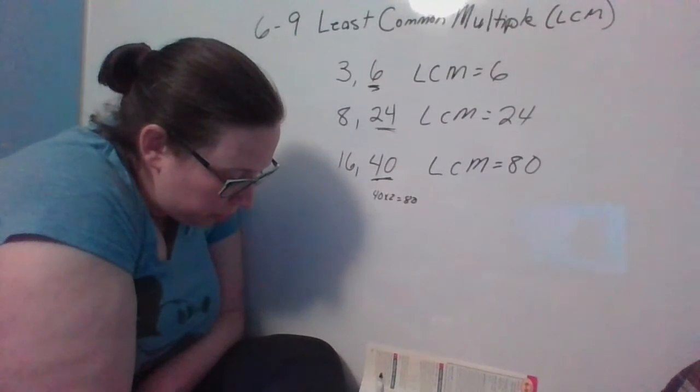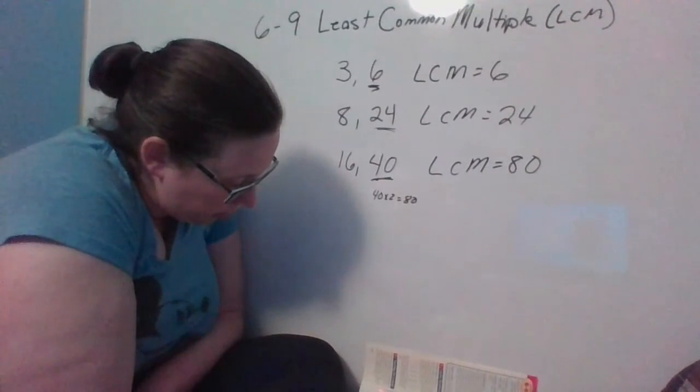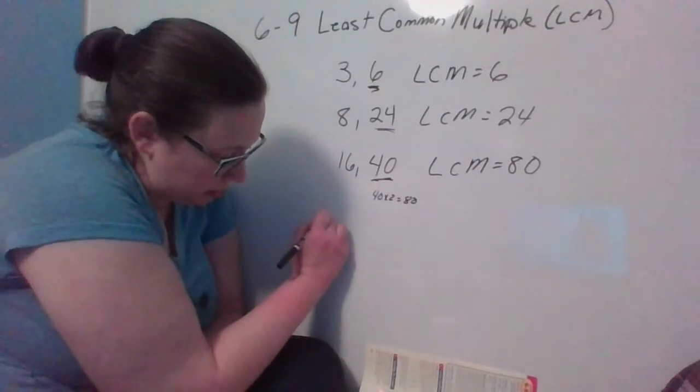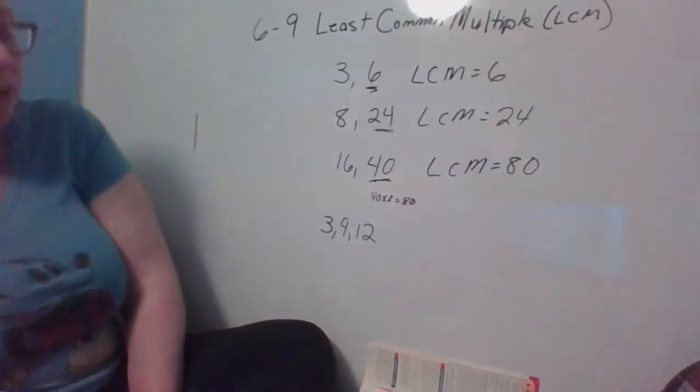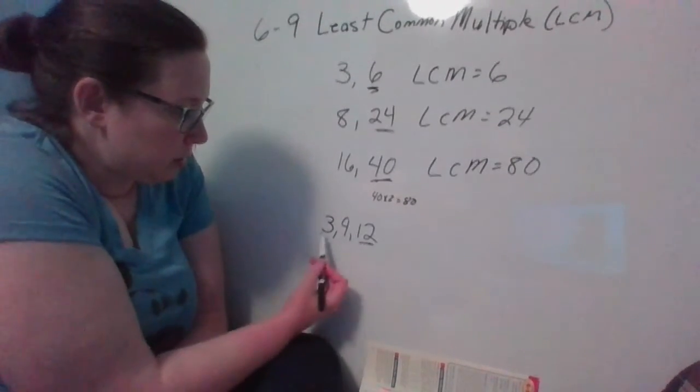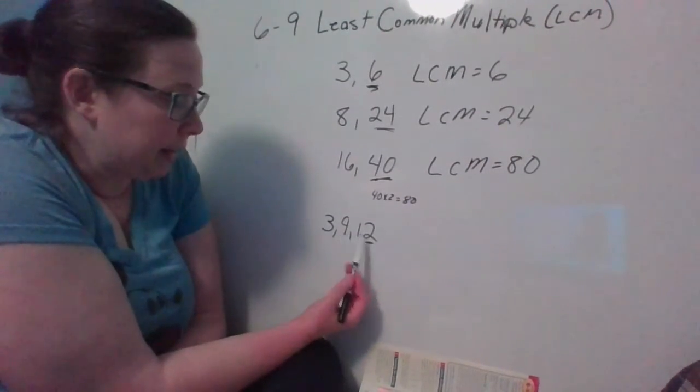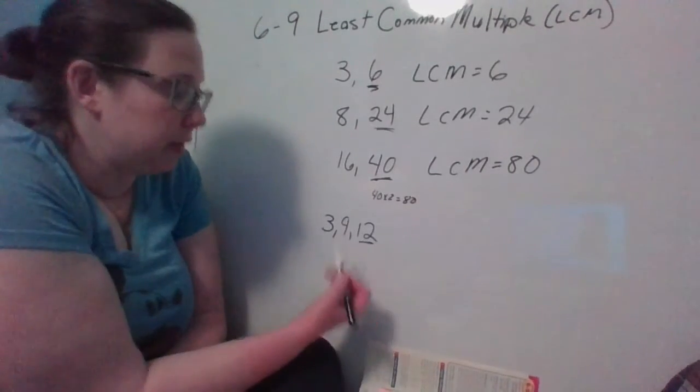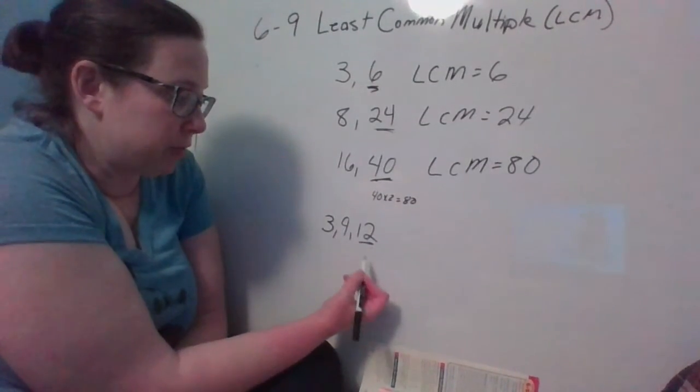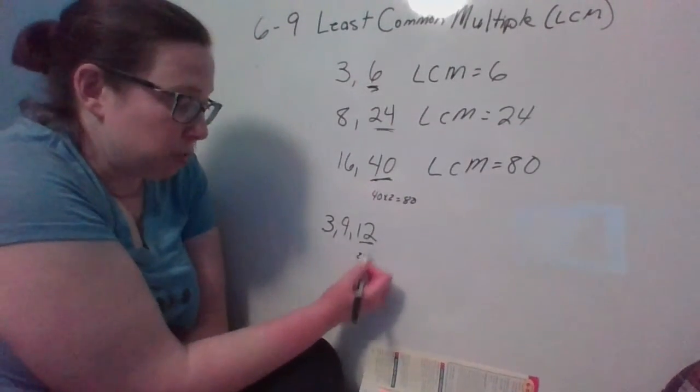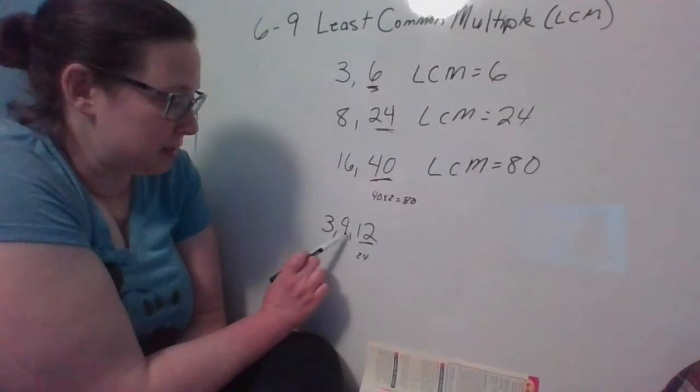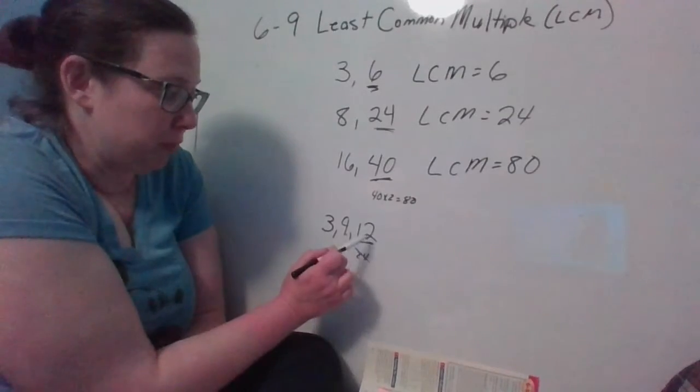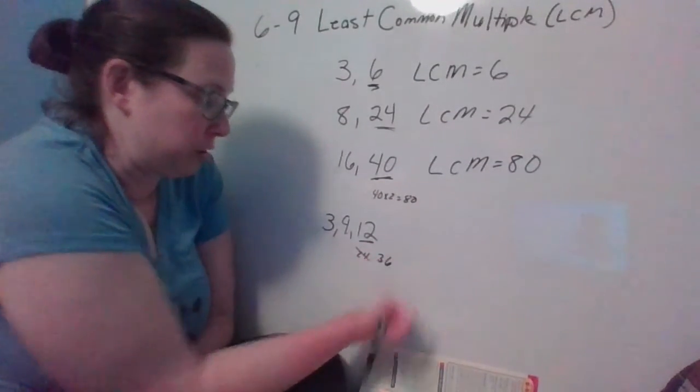Let's look at one that has three numbers. We're going to look at 3, 9, and 12. So we think about our larger number still. So 3 goes into 12 without a remainder, but 9 doesn't. So then I need to start multiplying. So 12 times 2 would be 24. So of course 12 goes into 24. 9 doesn't. 3 does, but because 9 doesn't, that doesn't work.